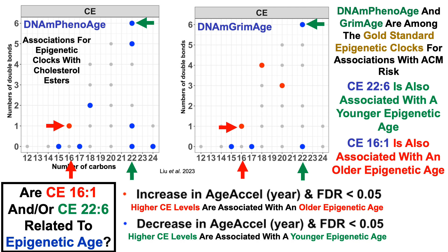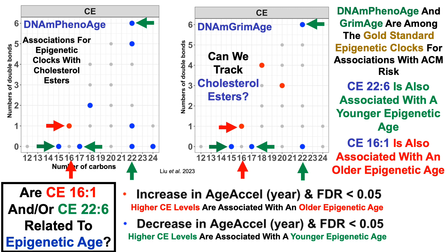There are several other notable cholesterol esters on the chart. CE 15:0 is associated with decreased all-cause mortality risk, and similarly CE 17:0 is associated with decreased all-cause mortality risk — which raises the question: can we track cholesterol esters? Not just 16:1 and 22:6, but also 15:0, 17:0, and maybe others.